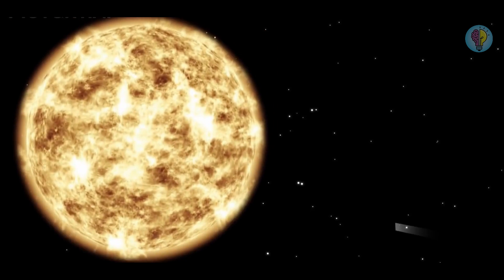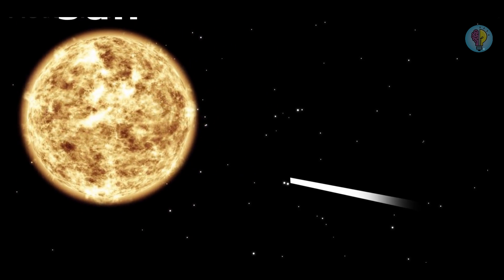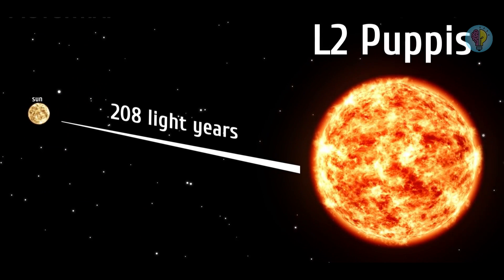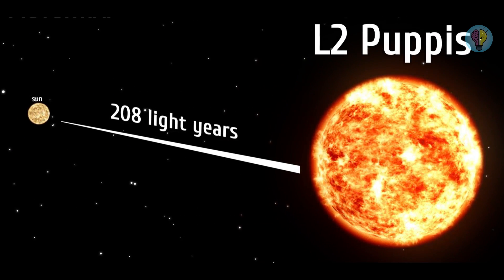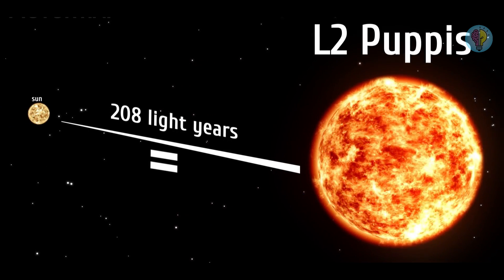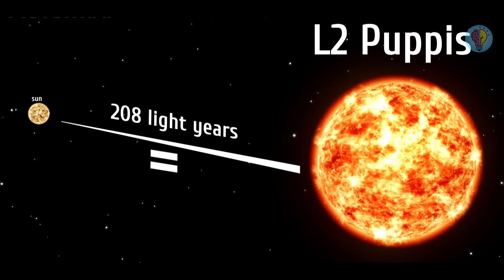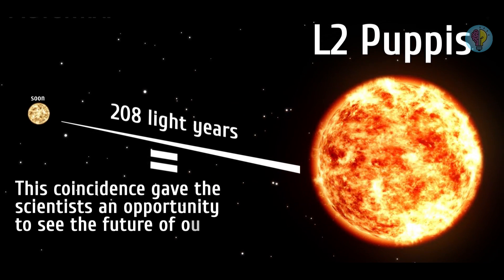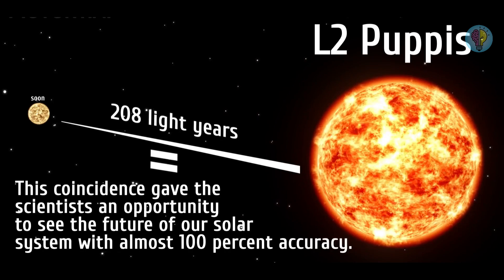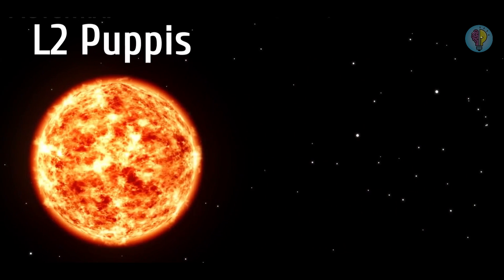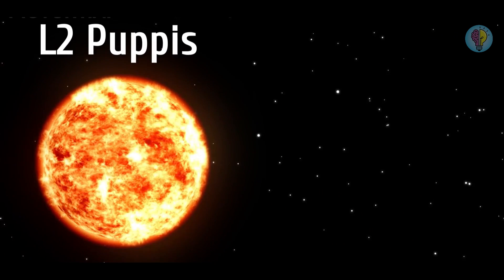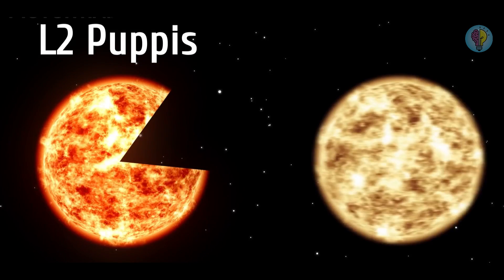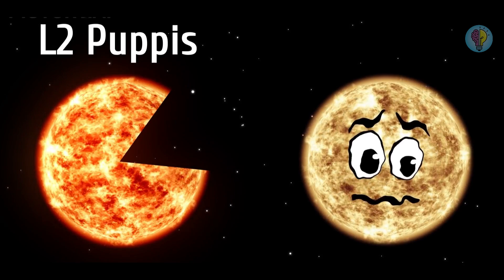They explain that 208 light years away from us, there's a remote star called L2 Puppis. Several billion years ago, this star looked exactly like our sun does nowadays, with the same mass and similar characteristics. This coincidence gave the scientists an opportunity to see the future of our solar system with almost 100% accuracy. L2 Puppis is pretty old, about 10 billion years old to be exact. Over its very long lifetime, the star lost a third of its mass. And that's the exact fate awaiting our sun too.